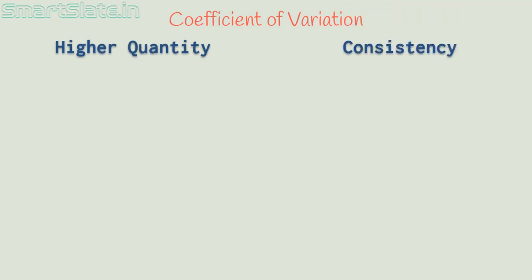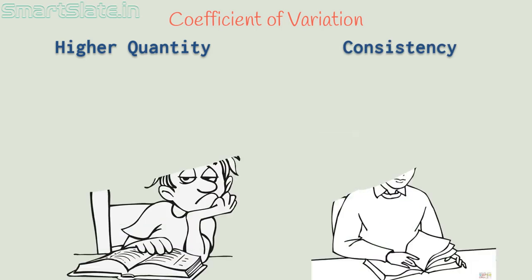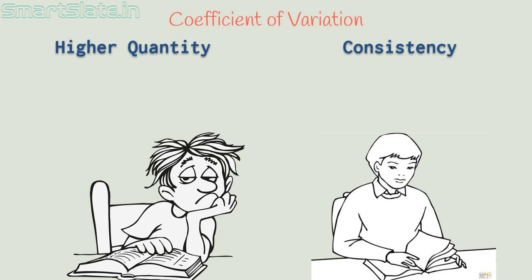Let me explain this with an example. Consider you have two friends. One friend can sit for hours and study. Sometimes he can study all night, but on some days he doesn't study at all.